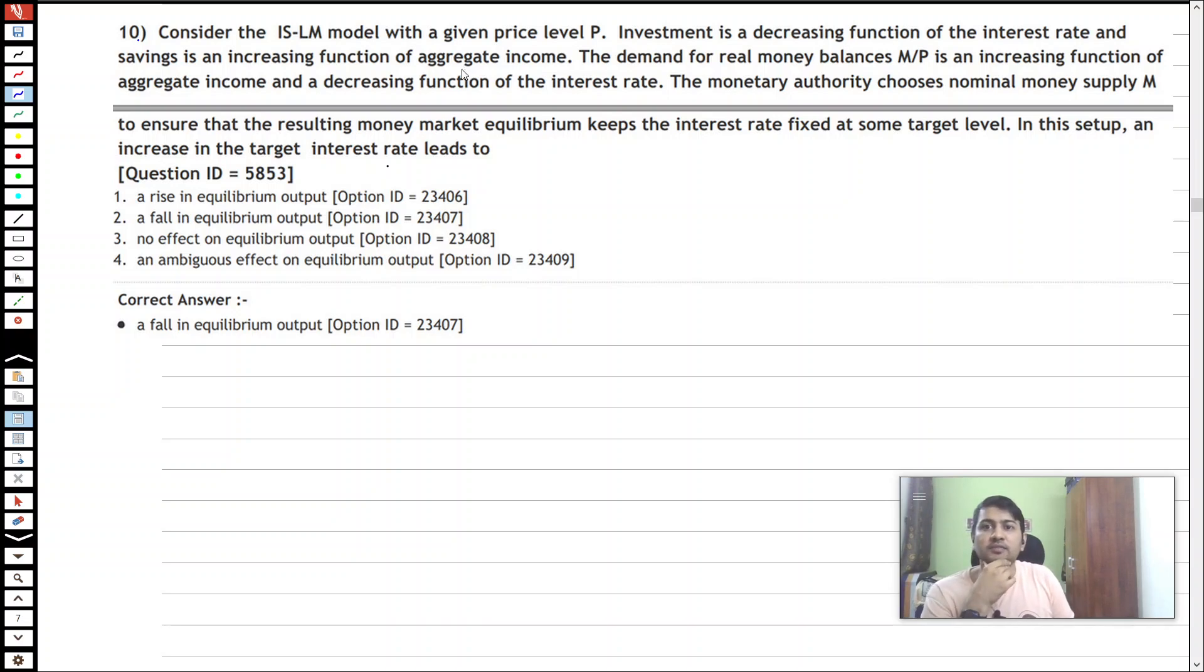In question number 10, we have a standard IS-LM model. It's just that the monetary authority is choosing a nominal money supply M to ensure that the resulting money market equilibrium keeps interest rate fixed at some target level.